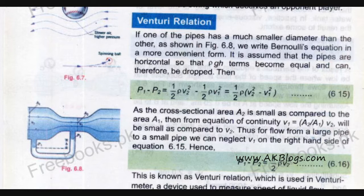If one of the pipes has a much smaller diameter than the others as shown in the figure, we write Bernoulli equation in a more convenient form. It is assumed that the pipes are horizontal so that rho g h terms become equal and can therefore be dropped.